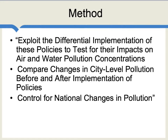Here's how the authors describe their own method. They're going to exploit the differential implementation of these policies across cities and use that to test for the impacts on air and water pollution concentrations. They're going to compare changes in city-level pollution before and after the implementation of these policies, and finally control for national changes in pollution. Basically, they're looking at different cities which have different policies — that gives us some natural variation — and they look at outcomes to see how much these different policies really mattered.